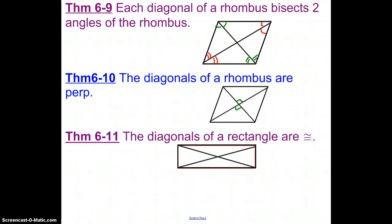Let's take a look at this first set of theorems. The first one says each diagonal of a rhombus bisects two angles of the rhombus. If I were looking at this, remember if it's a rhombus, all four of these sides are going to be congruent, as well as the fact that they're going to be parallel.